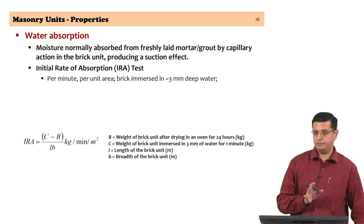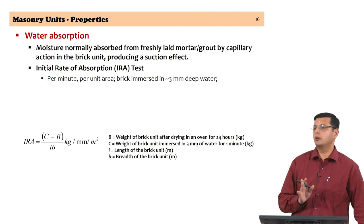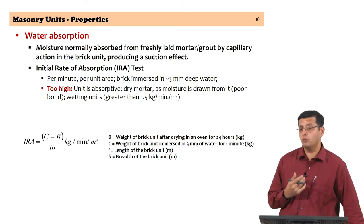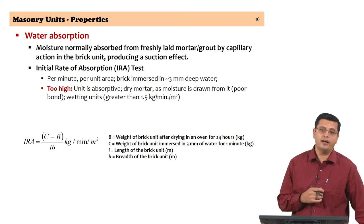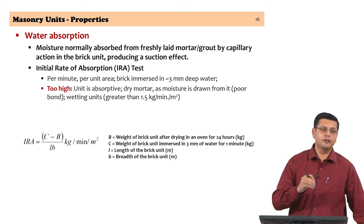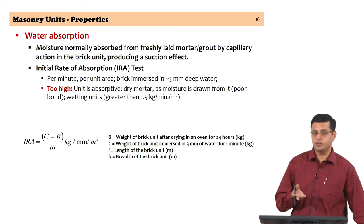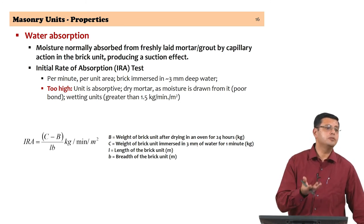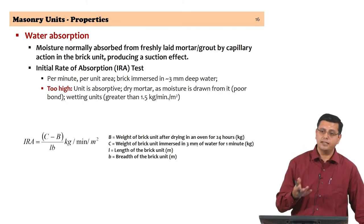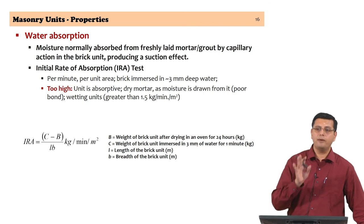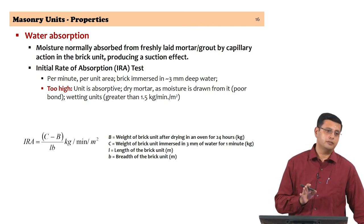Clay brick is notorious for water absorption. If the IRA is too high, the mortar will dry up, reducing the moisture available for the hydration process and causing a problem of bond. This is why bricks are wetted before taking to site for construction. Typically if the IRA is about 1.5 kg per minute per meter square or higher, you definitely have to wet your bricks; otherwise you will have a bond problem.